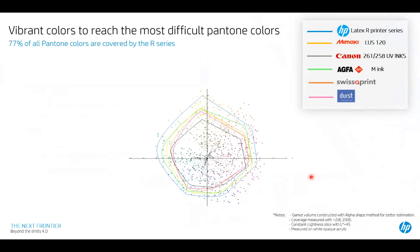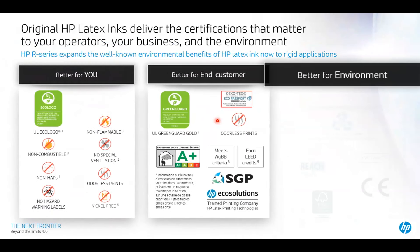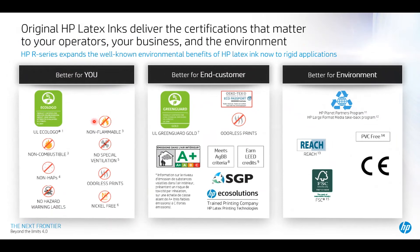How about color gamut? We added more pigment to the ink on the R for a wide gamut, more vivid colors — you can now reproduce up to 70% of all Pantone colors. This helps you achieve those hard-to-reproduce corporate branded colors that UV has a challenge with. That smaller gamut represents the Canon 261 to 58 series inks, designed for ink adhesion — so the trade-off is color gamut. We're going to give your operators, your business, and the environment what matters most: the highest certifications in the industry like Ecologo and GreenGuard. No need to ventilate your printer because we have no harmful VOCs. It's odorless — overall, better for us, better for the environment.